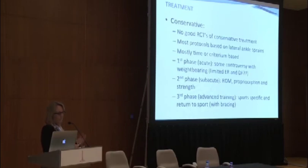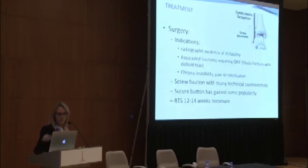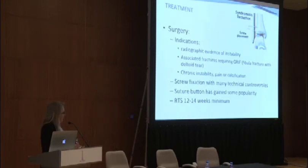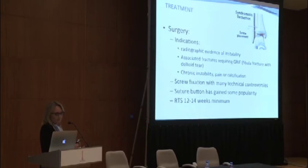Most rehabilitation protocols are similar to lateral ligament injuries — phase-based and time and criteria-based. Regarding surgery, there are specific indications: overt instability, associated fractures requiring surgery, and chronic instability. There are controversies about screw fixation — what kind and size of screws and whether to go through three or four cortices. The suture button has gained some popularity recently. For athletes, it's important to communicate that this will take a minimum of 12 to 14 weeks before return to sport, and that is an optimistic estimate.